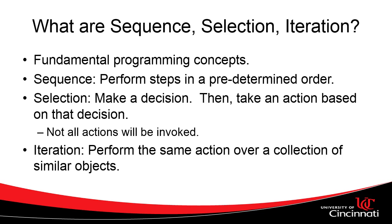Selection means we're going to make a decision and then take an action based on that decision. If one condition is true, we might do one behavior; otherwise, if it's not true, we'll do a different behavior. Using this, we might not invoke all actions. Iteration is going to perform the same action over a collection of similar objects, or maybe for a certain number of times — for example, prompting the user three times for a password and on the third time locking the user out.